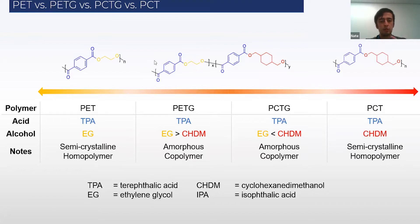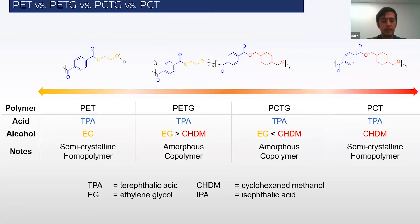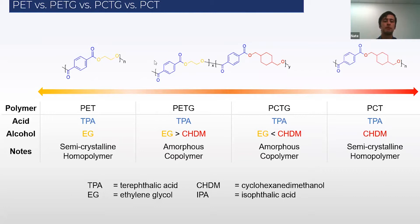As you transition to using less of that yellow component and more of that red component, you get into different types of materials like PCTG and perhaps PCT. But just to summarize: in PETG, you're actually substituting a little bit of that yellow component for that red component, and that allows the material to be more flexible than PET. I hope that clears up the differences between PET and PETG.